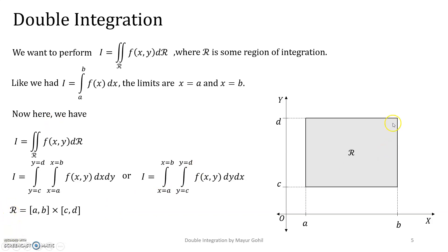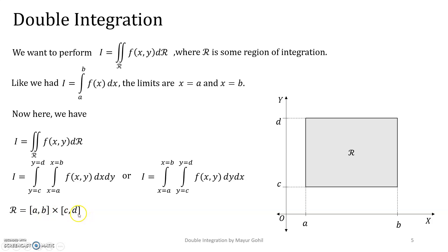Now, this region R that we have taken as a rectangle — mathematically this rectangle is represented by a cross product. You can see there is the interval [a, b] which we take cross product with interval [c, d]. This is the notational way of writing a rectangle in a two-dimensional plane. So whenever you see such a cross product of intervals, it is generally a rectangle.